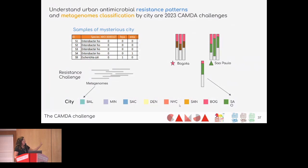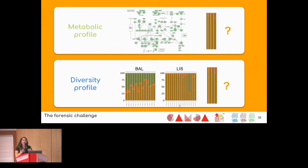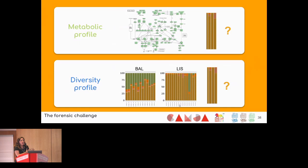For the forensic challenge — metagenome classification by cities — we worked with two levels of information from the metagenomes: the metabolic profile, which is all the genes coding for functions in metabolic pathways, and the diversity profile, which is the taxonomic diversity obtained from specific markers like 16S. We tried to do the city classification using both levels of information.